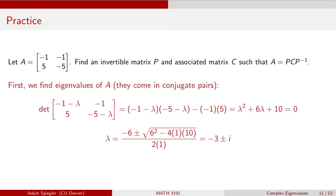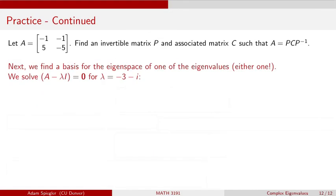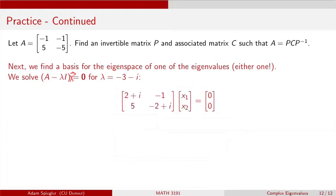In order to identify matrix P and matrix C, let's go ahead and find an eigenspace for one of these eigenvalues. I would like to do a kind of analogous diagonalization of this matrix A, which, because it has complex eigenvalues, we're not going to be able to perfectly diagonalize. So let's take the eigenvalue minus 3 minus i and find a basis for its eigenspace by solving the equation A minus lambda I times X equals the zero vector.